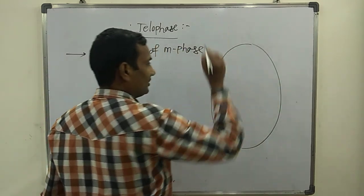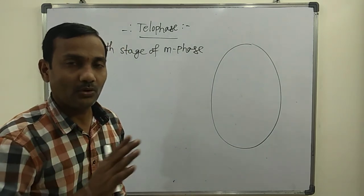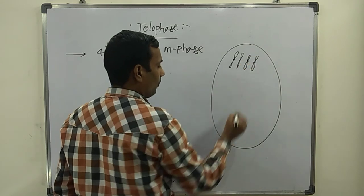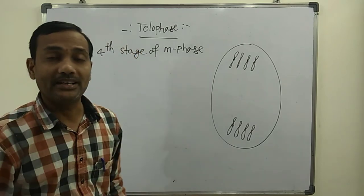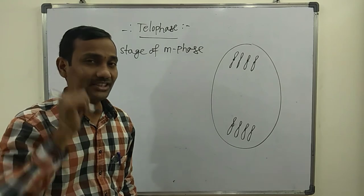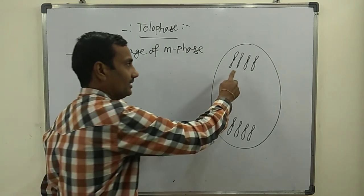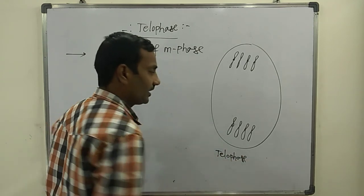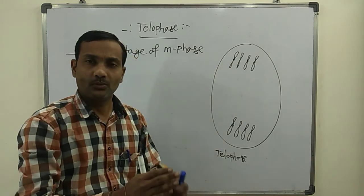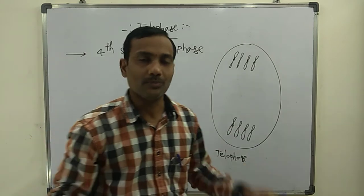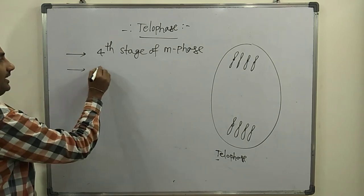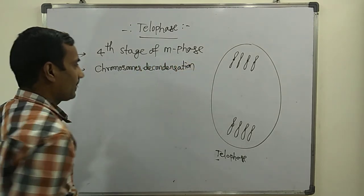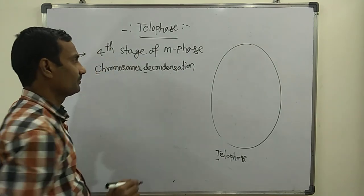At the end of anaphase, all chromosomes have migrated to opposite poles, each consisting of only one DNA. At each pole there are four chromosomes. In telophase, chromosomes decondense — decondensation takes place, and at the end of telophase all chromosomes are decondensed.